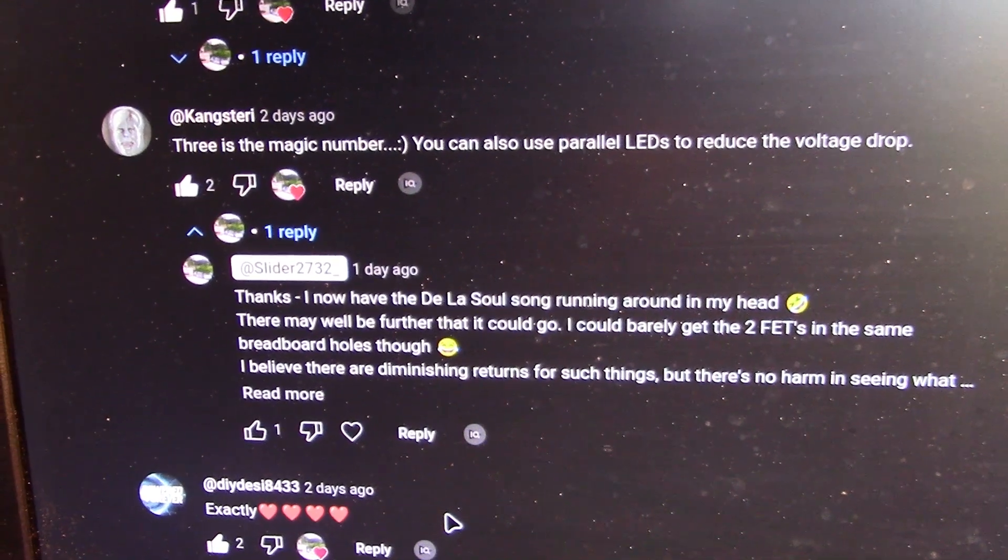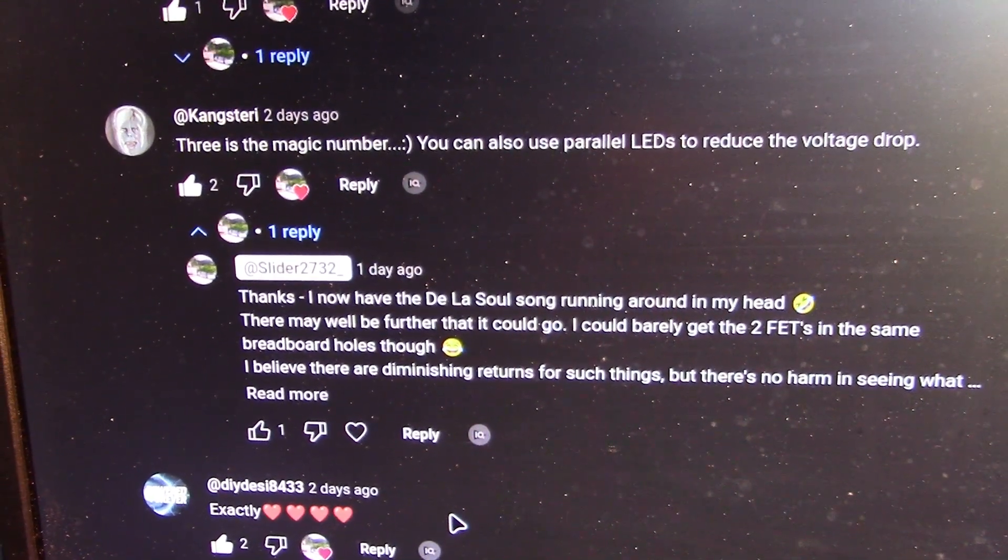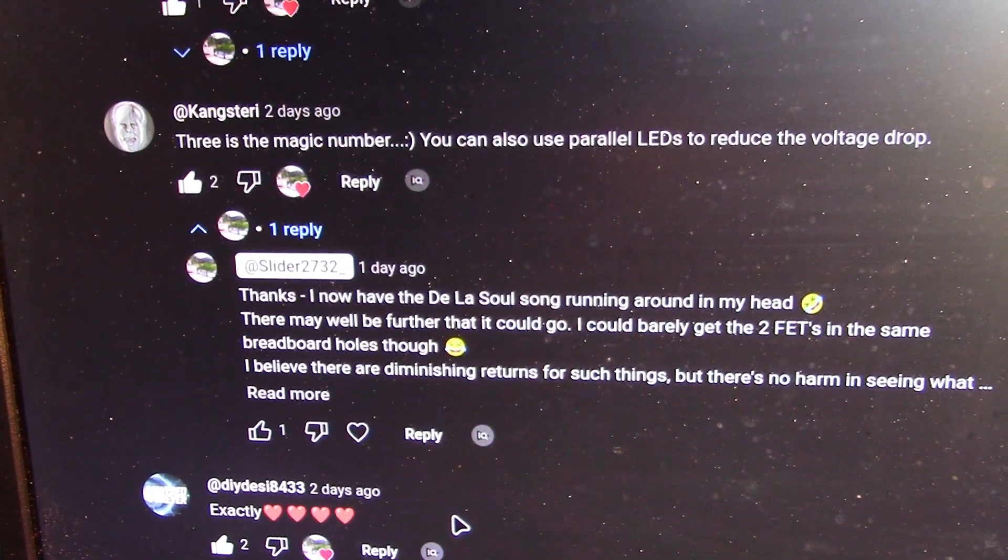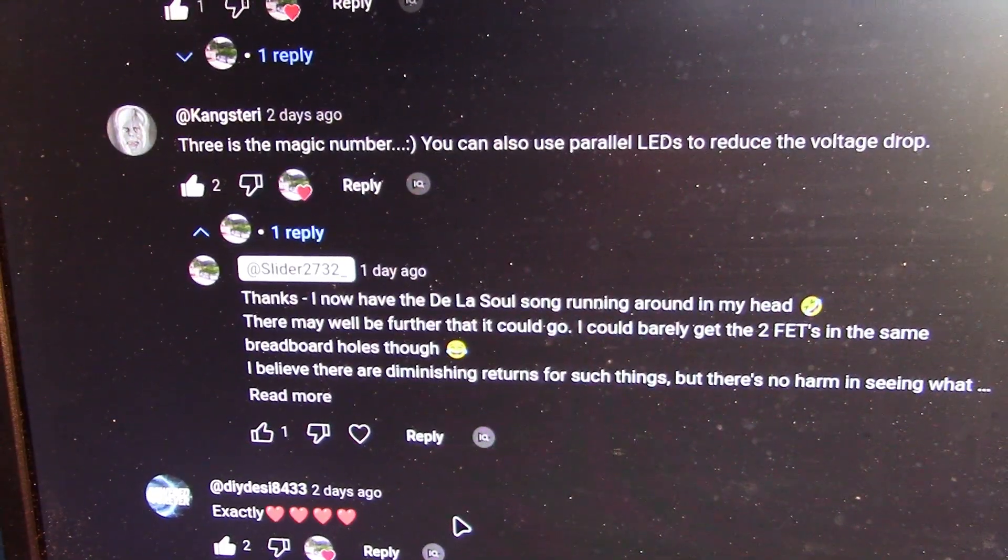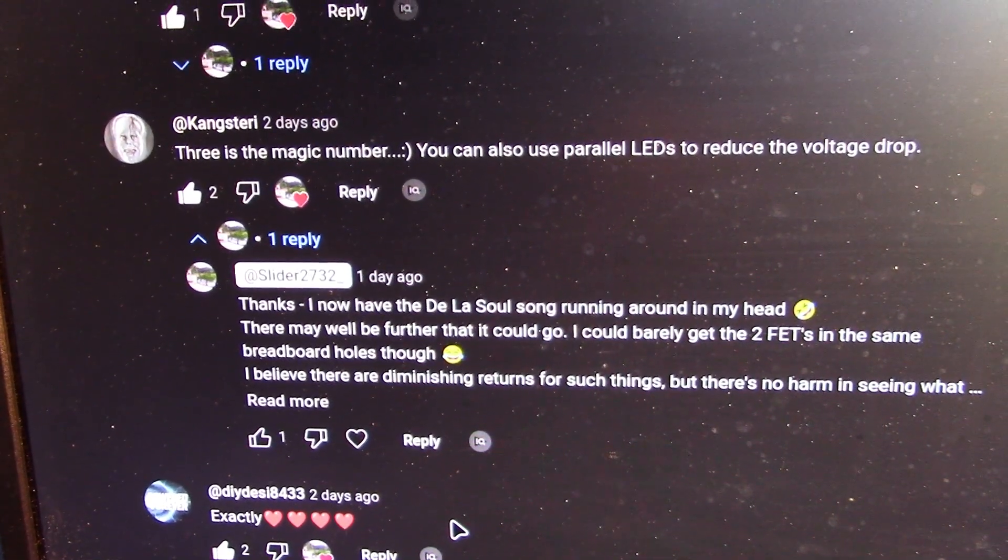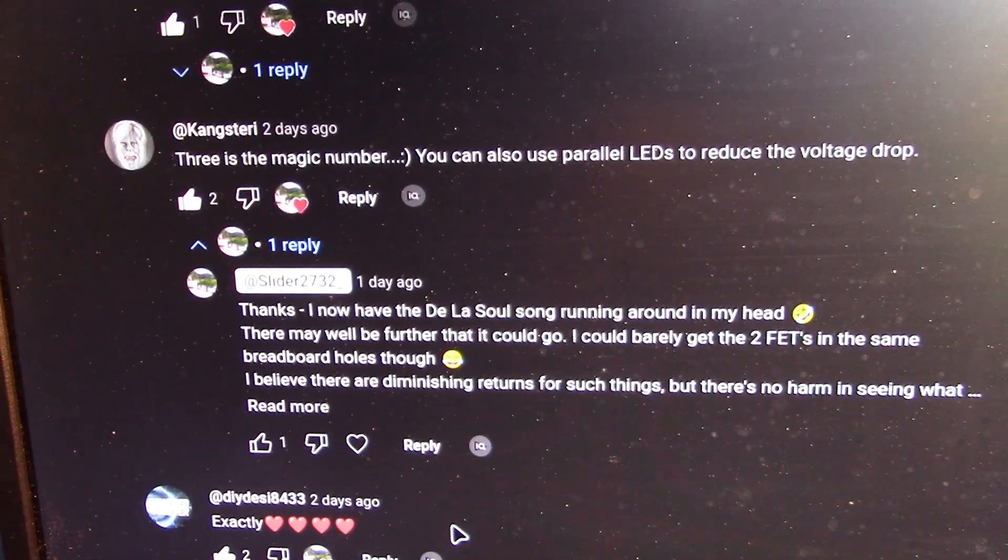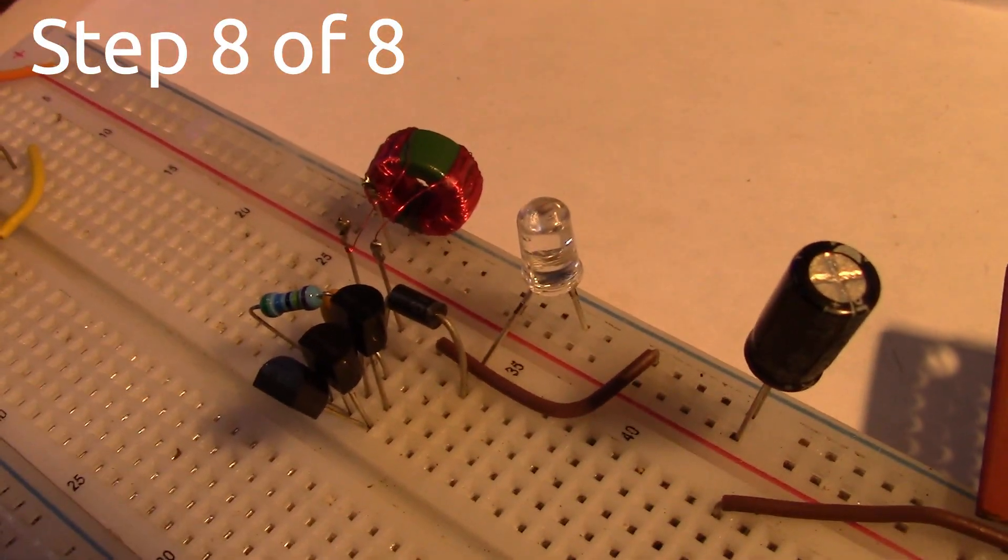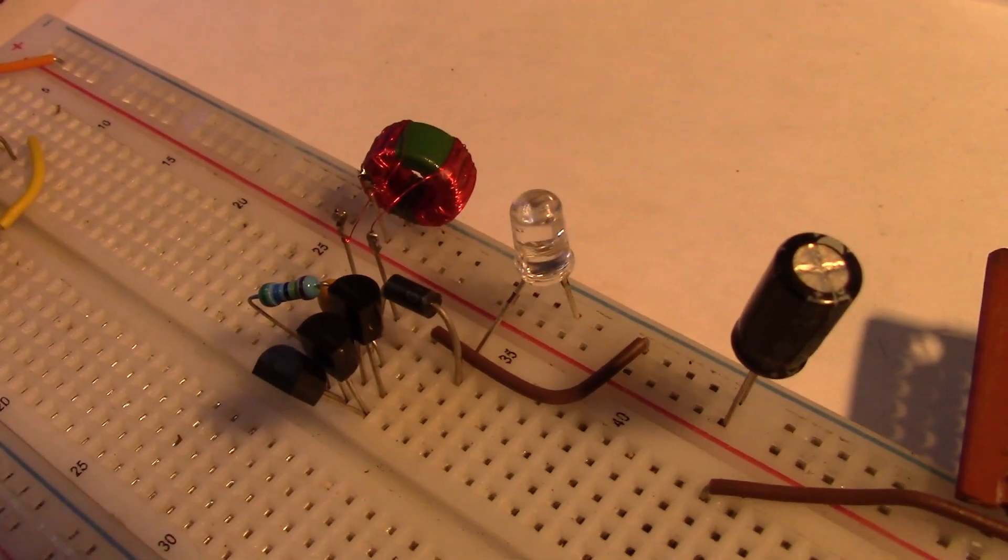Now here's something to finish with. I do enjoy Kengsteria's comments and thank you very much for being a subscriber because he says three is the magic number. You can also use parallel LEDs to reduce the voltage drop. So three of the K117s, well that's what I've done now. Somehow I've got three of these K117s in the circuit so we'll see if they make a difference using three instead of two.